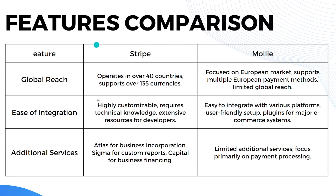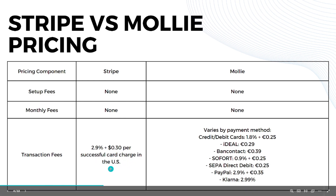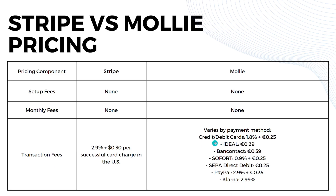Now let's go to the pricing comparison. Both Stripe and Mollie have no setup fees or monthly fees. When it comes to transaction fees, Stripe offers 2.9% plus $0.30 per successful card charge in the US, while Mollie's fees vary by payment method.